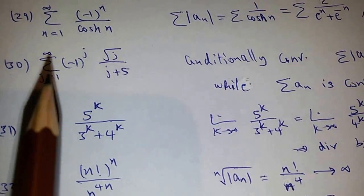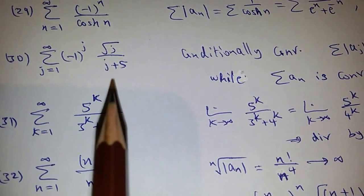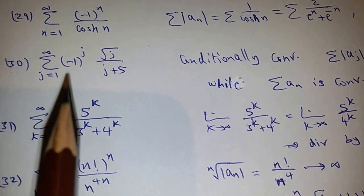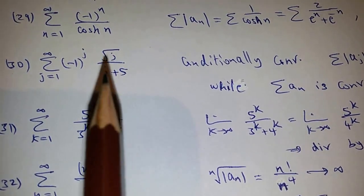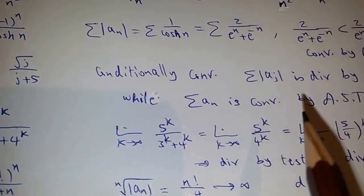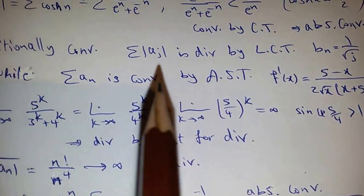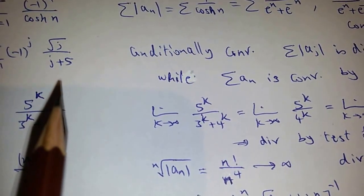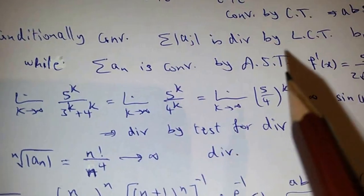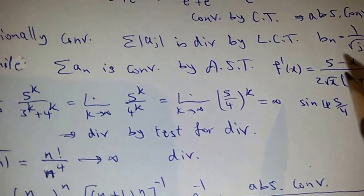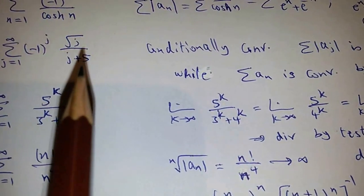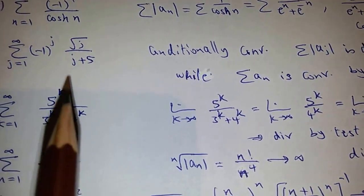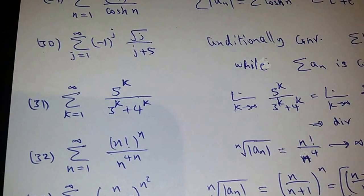Here, you can prove by the alternating series test that it is convergent. While if you consider the summation of the absolute value, you can prove that the series Σ√j/(j+5) is divergent by the limit comparison test with 1/√j, because you subtract the highest power. So this series is conditionally convergent.